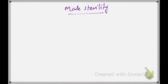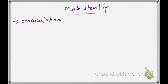Male sterile plants are important to prevent unnecessary pollination and to eliminate the process of emasculation. Emasculation is the manual removal of pollen. To avoid emasculation and unnecessary pollination in hybrid plants, male sterility is required.